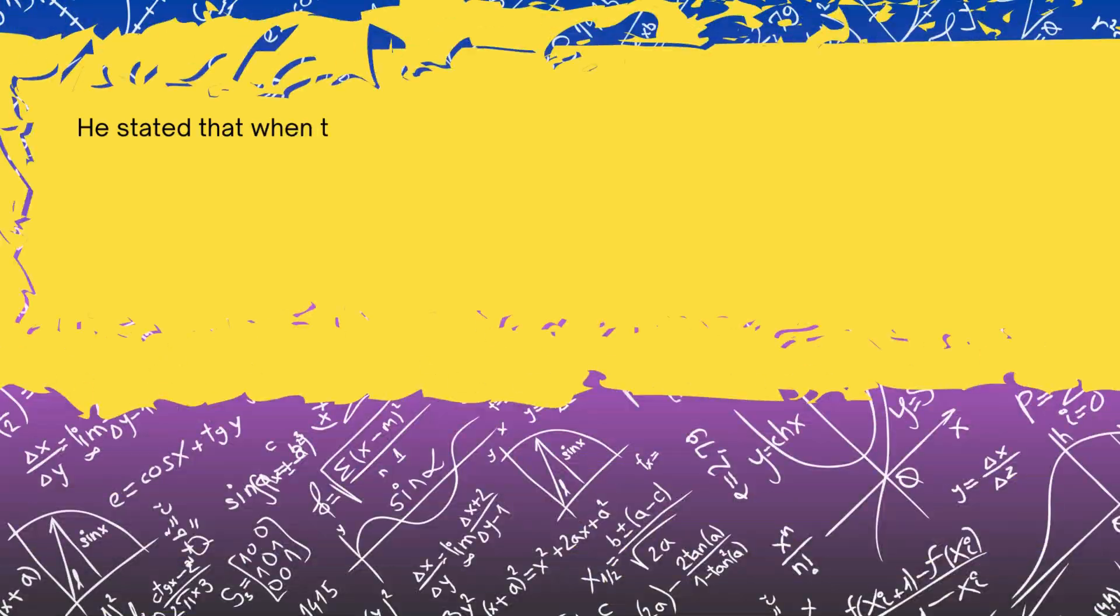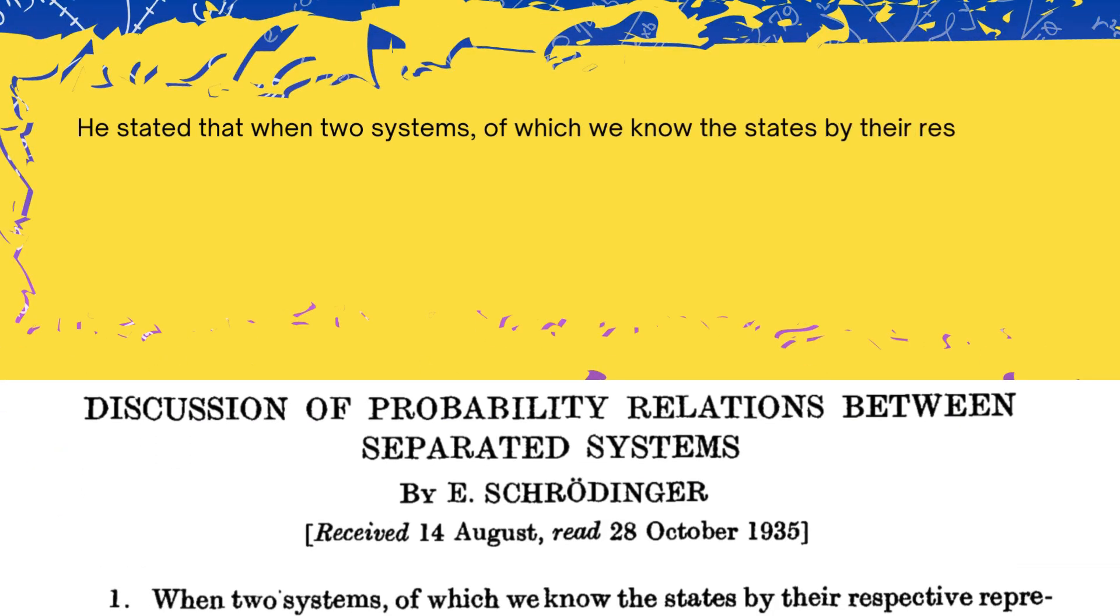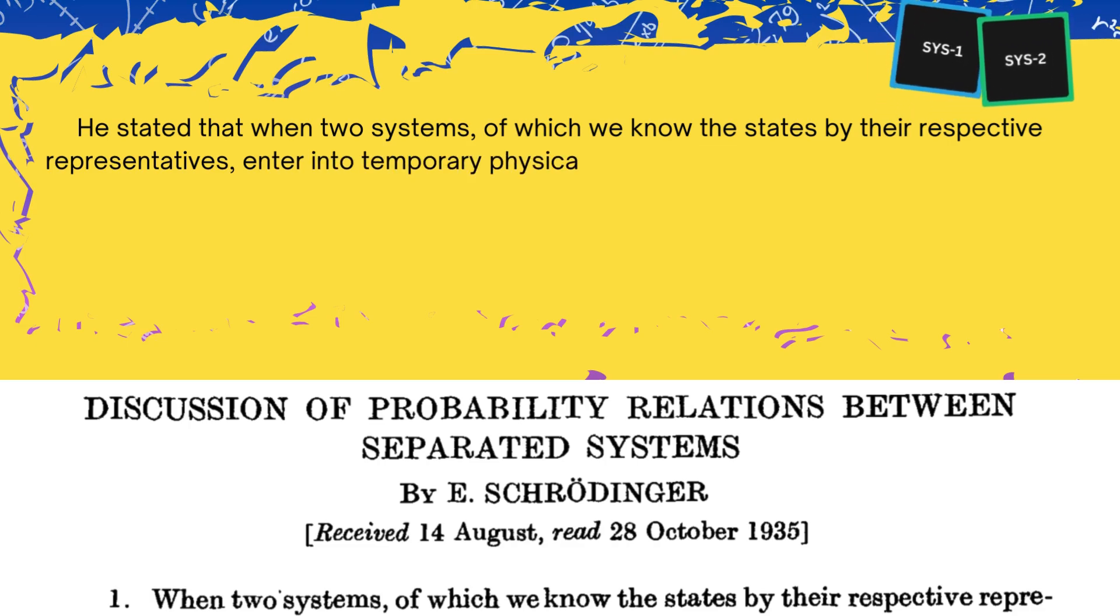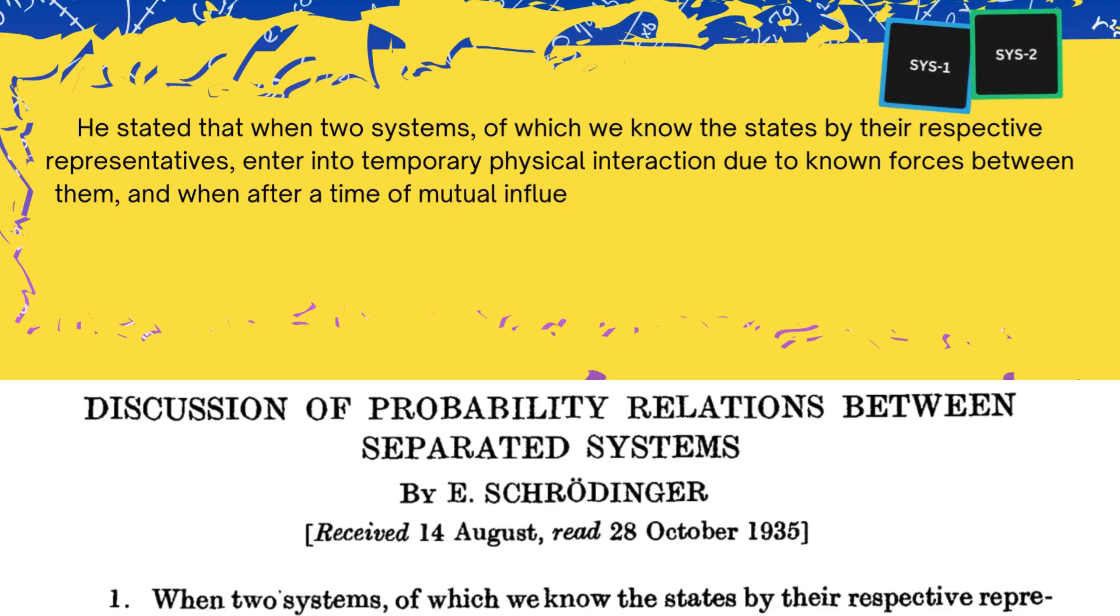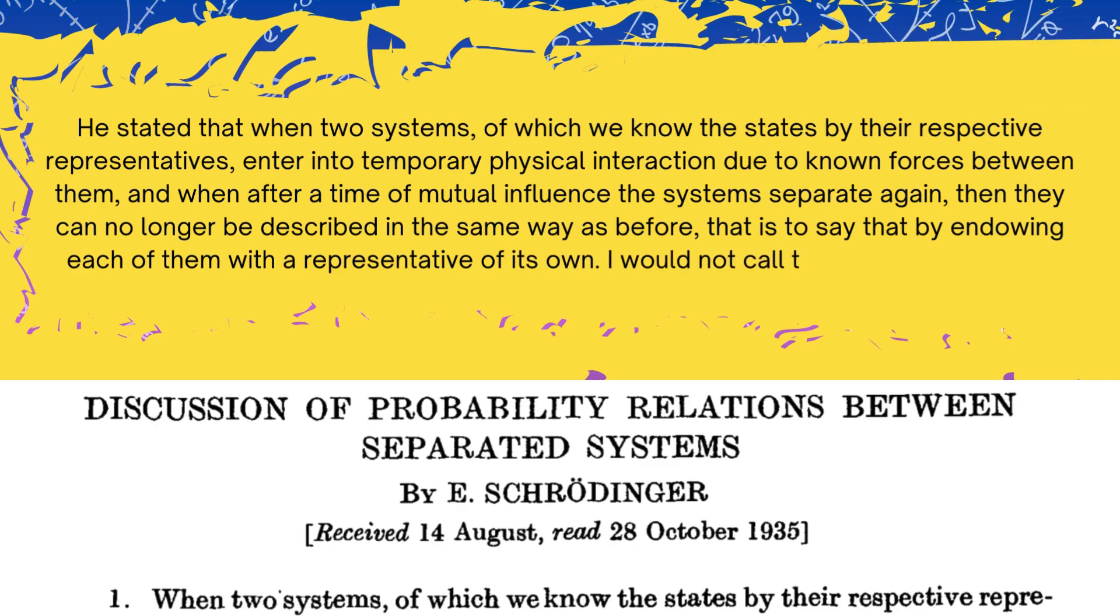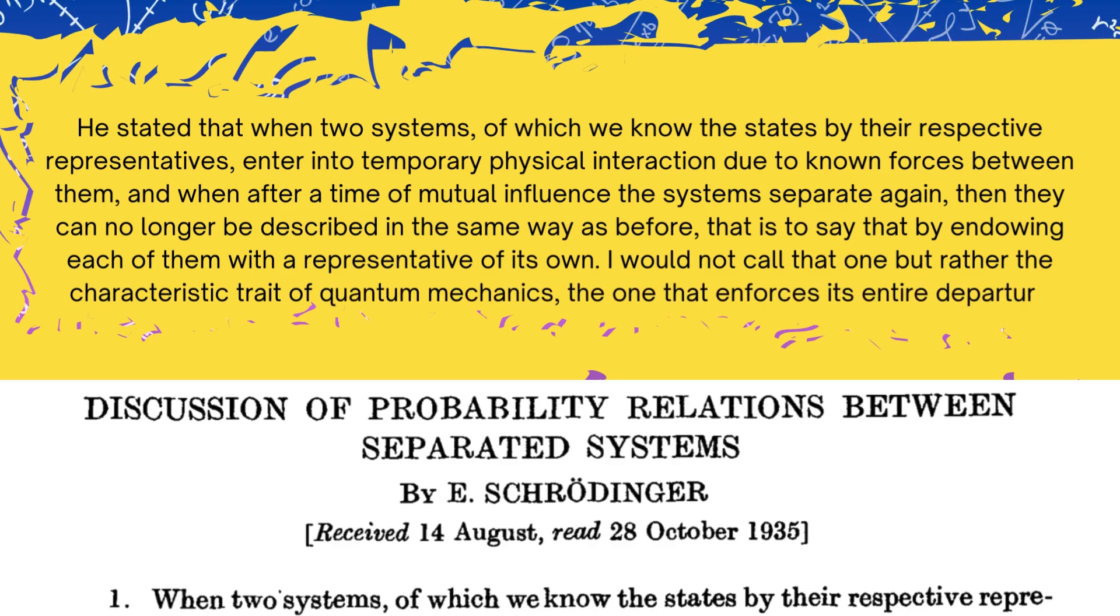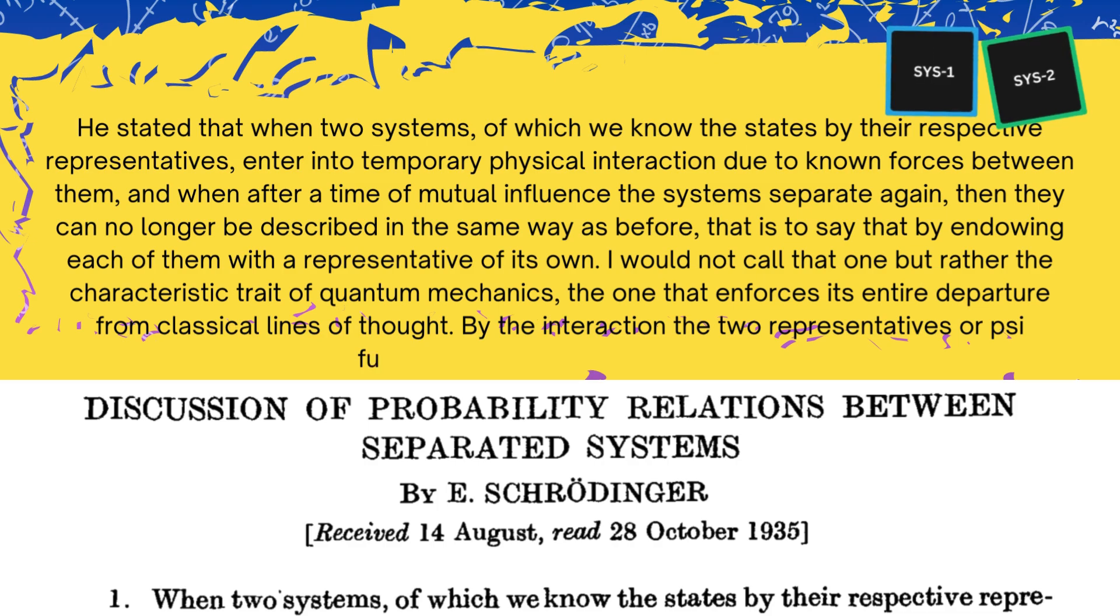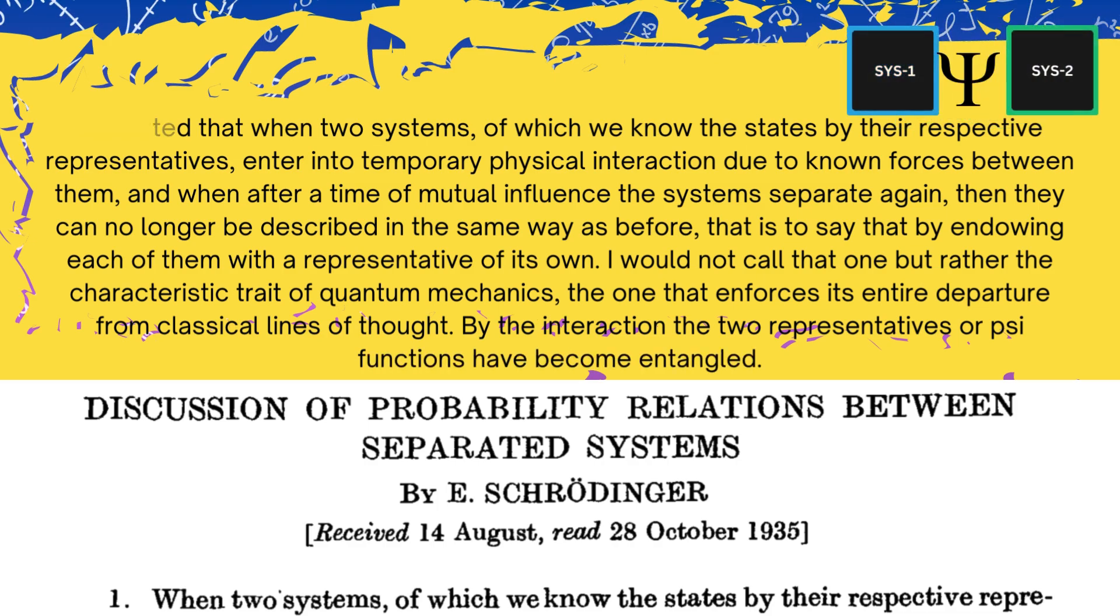He stated that when two systems, of which we know the states by their respective representatives, enter into temporary physical interaction due to known forces between them, and when after a time of mutual influence the systems separate again, then they can no longer be described in the same way as before. That is to say that by endowing each of them with a representative of its own. I would not call that one, but rather the characteristic trait of quantum mechanics, the one that enforces its entire departure from classical lines of thought. By the interaction, the two representatives or psi functions have become entangled. This is where the term quantum entanglement came from.